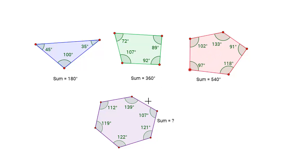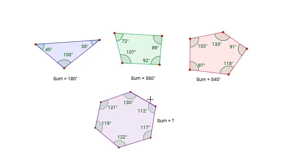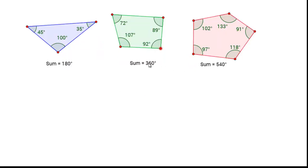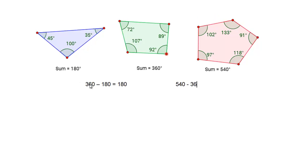Notice that the sum of the interior angles of these figures is not only constant, but follows a pattern. Let's figure out what the pattern is. If we take the quadrilateral sum of 360 degrees and subtract the triangle sum of 180 degrees, we get 180 degrees. 540 for the pentagon minus 360 for the quadrilateral again gets us 180 degrees.